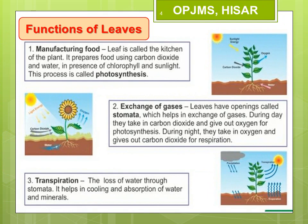Now let us discuss the functions of the leaves. The first and most important function of a leaf is the manufacture of food. Plants prepare their food in the presence of sunlight and chlorophyll, with the help of water, minerals, and carbon dioxide, by the process known as photosynthesis. The chlorophyll present in the leaves traps the solar energy and helps in fixing carbon dioxide, water, and minerals into food — that is glucose — which is stored in the leaf in the form of starch. Almost all living organisms are dependent directly or indirectly on plants for obtaining their food.